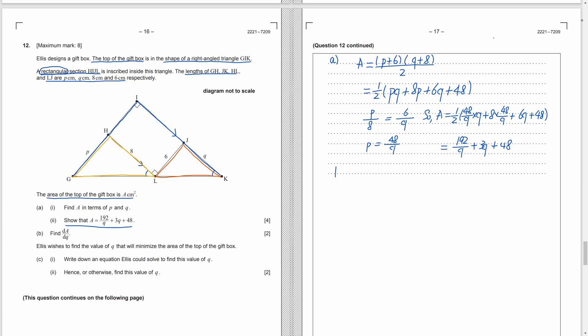Part B, find dA over dQ. So, we just need to differentiate the area by power rule. Put the index in front and subtract the index by 1. As 40A is a constant, it disappears. Part C, we want to minimize the area. So, we set the derivative to be 0. We have negative 192 over Q square plus 3 equals 0. And then, we just solve this equation by algebraic skills or by calculator. We get Q equals 8.